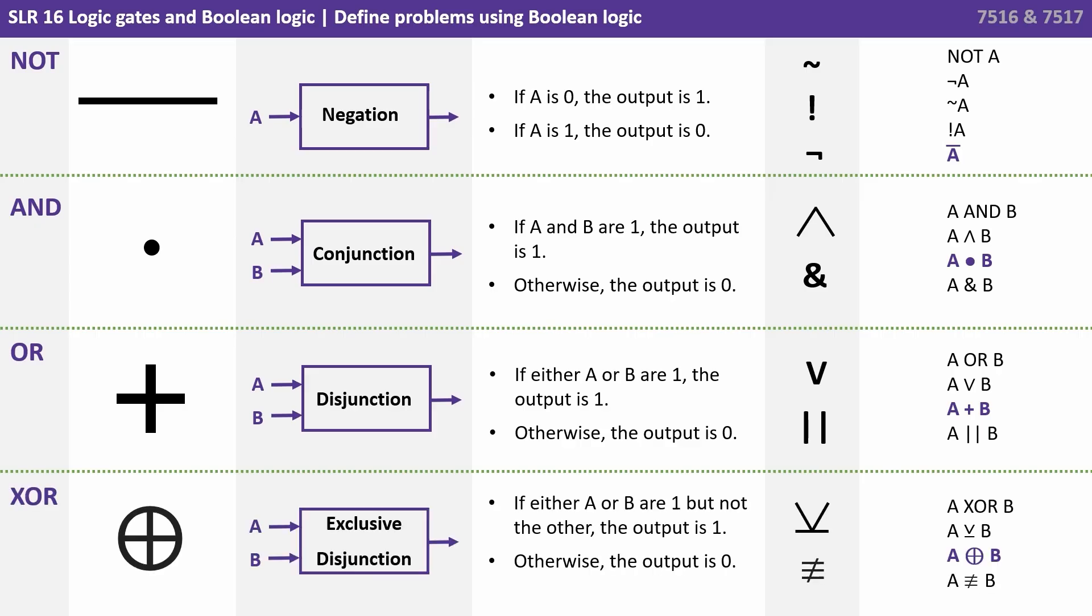Next we have XOR or exclusive disjunction. Now this is quite similar to OR with a subtle difference. Again we have two inputs, and if either A or B are 1 but not the other, then the output is 1. So that's the difference. With OR, A could be 1, B could be 1, or both A and B can be 1. In all those situations the output's 1. But with an exclusive OR, A has to be 1 and B 0, or B has to be 1 and A 0. They can't both be 1. And this is represented by the plus symbol again, but this time in a circle.